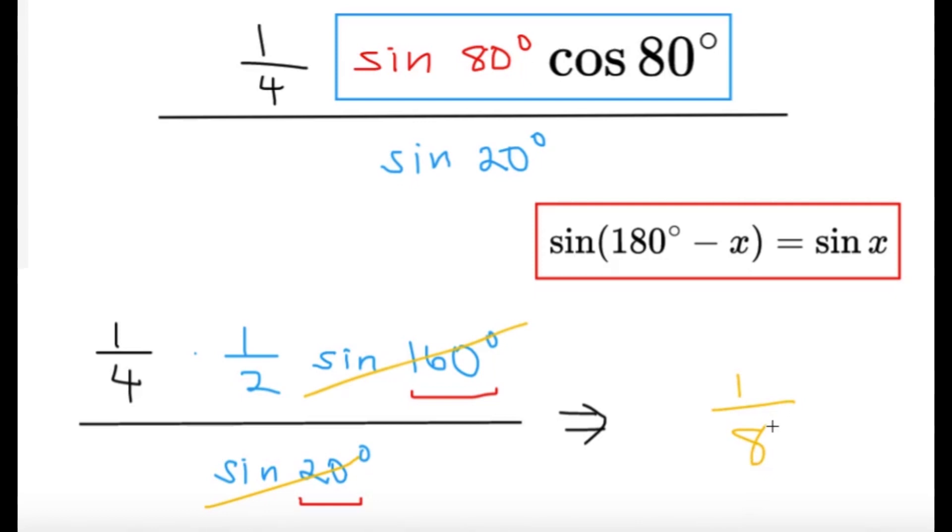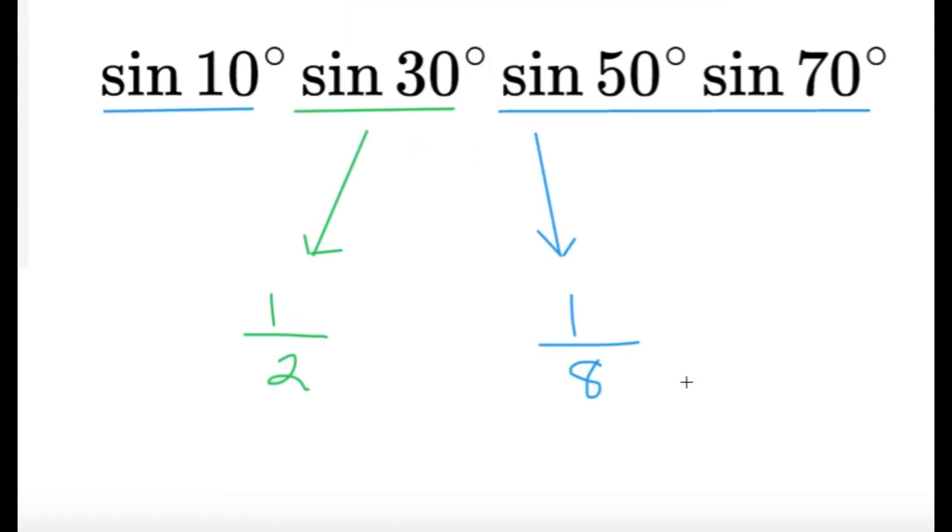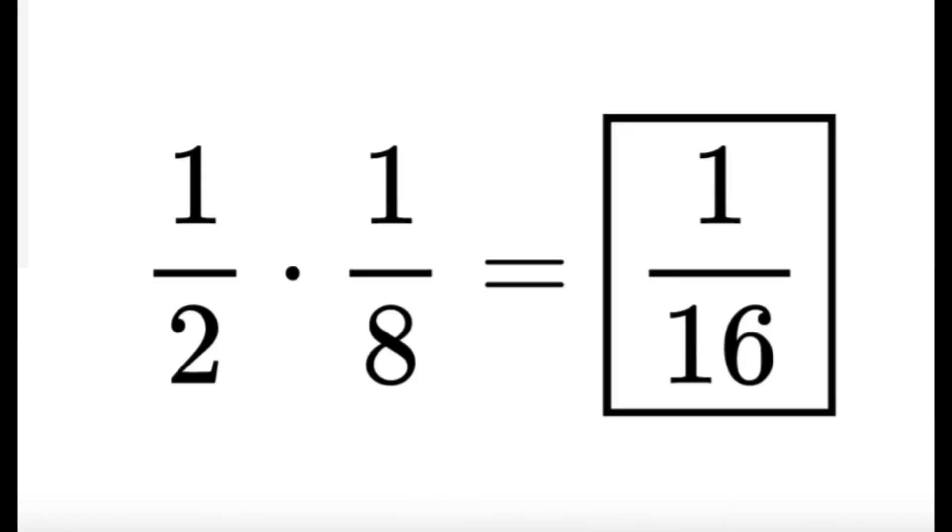We're not done, however. We've only proven that the blue underlined terms, they multiplied to be one-eighth. And then, the green term, from our knowledge of special angles, that's just equal to one-half. So, our final answer should be the product of these two, one-half times one-eighth. And that's going to give us the answer of one over 16. And this will be our final answer.